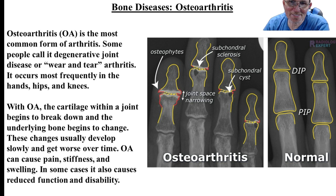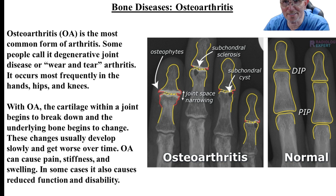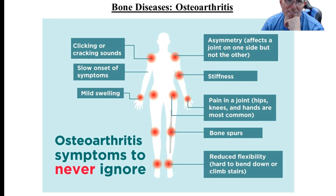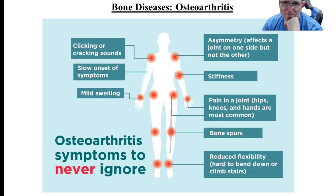With osteoarthritis, it actually gets a little better as you go along in the day — starts off rough and improves. Rheumatoid arthritis starts off okay and gets worse. Symptoms include clicking or cracking and grinding sounds, slow onset, mild to moderate stiffness, and difficulty climbing stairs. The hips, knees, and hands are most commonly affected. Bone spurs — those are the osteophytes — are characteristic of osteoarthritis.